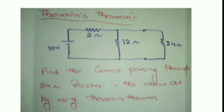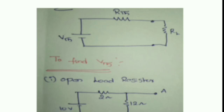The first process: we need to open the 24-ohm load resistor, then find the Thevenin voltage across that terminal. In the next step, find the Thevenin resistance across that terminal, and finally find the IL value. So we are going to convert the total circuit into Thevenin's voltage and Thevenin's resistor, and this RL will be replaced automatically.